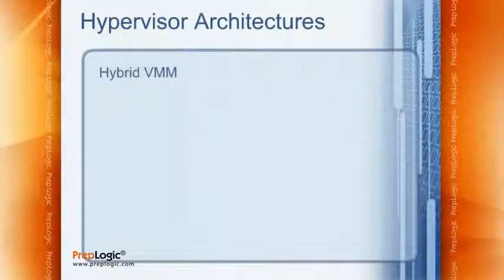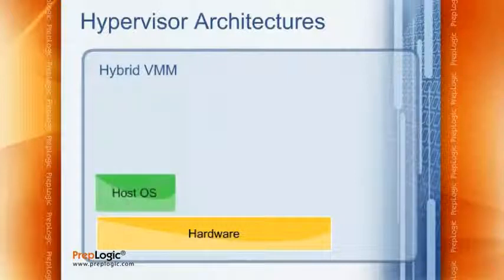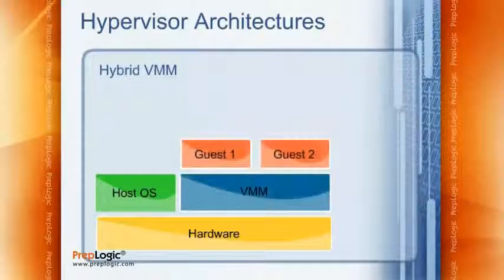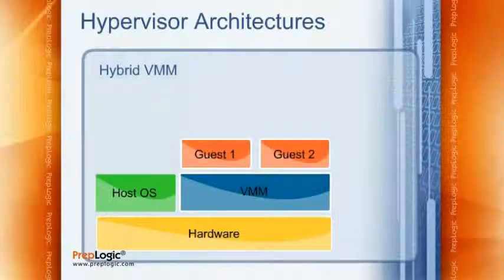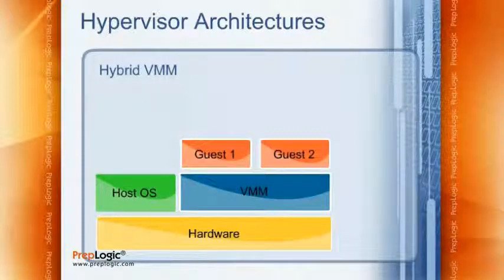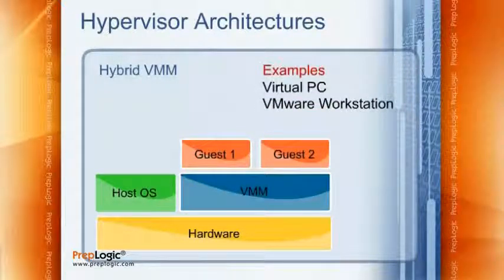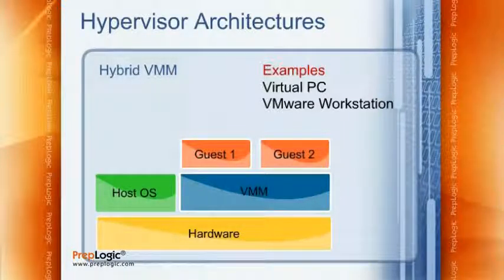The next type is the hybrid virtual machine manager. Here, we have the hardware and a host operating system, and alongside the host OS, the virtual machine manager runs. In some ways it communicates through the host OS to reach the hardware, and in other ways it communicates directly with the hardware. Guest virtual machines run in the VMM on top of the host OS. Examples include Virtual PC from Microsoft and VMware Workstation.